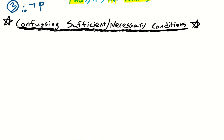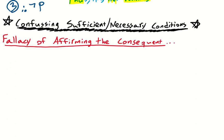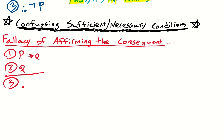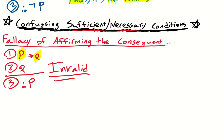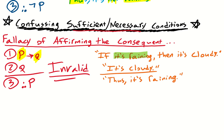Here's what happens when we confuse sufficient and necessary conditions. One fallacy is the fallacy of affirming the consequent. Let's say someone makes the argument: first premise, if p then q; second premise, q; and then they say, because we know q is the case, p must have brought it about — p must be the case. But this is invalid. Why? Because we're confusing sufficient and necessary conditions. The antecedent is only sufficient for the consequent, not necessary — but this treats the antecedent as if it were necessary. For example: if it's raining, then it's cloudy. It's cloudy — thus it's raining. Clearly something went wrong. Just because it's cloudy, we cannot infer that it's raining. We have the fallacy of affirming the consequent.